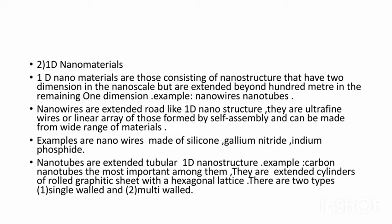The next one is 1D Nanomaterials. These are nanosystems extended beyond 100 nanometers in one of the dimensions — the nanostructure has 2 dimensions in the 1 to 100 nanometer range and one dimension beyond 100 nanometers. For example, nanowires and nanotubes. Nanowires are rod-like 1D nanostructures, and ultrafine wires are linear arrays of dots formed by self-assembly.